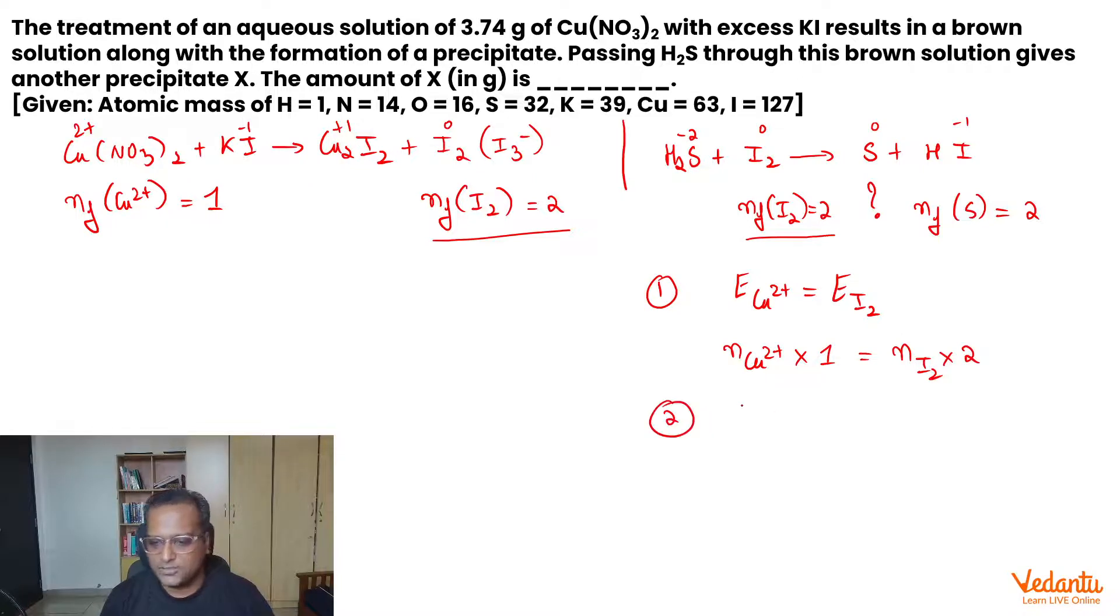From the second reaction, what do we get? From the second reaction, we get equivalence of I₂ is equal to equivalence of sulfur. So, number of moles of I₂ into the n-factor, that is 2, is equal to number of moles of sulfur into n-factor, that's again 2. So, please notice, this thing and this thing are common, they are identical.